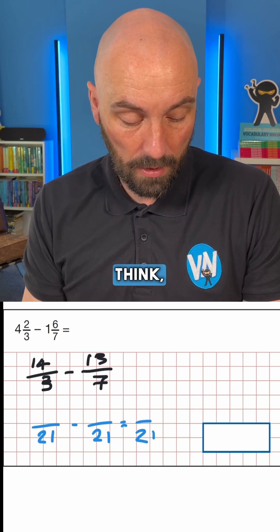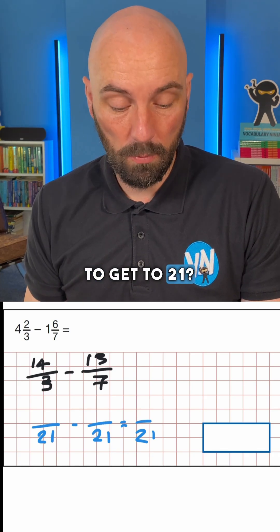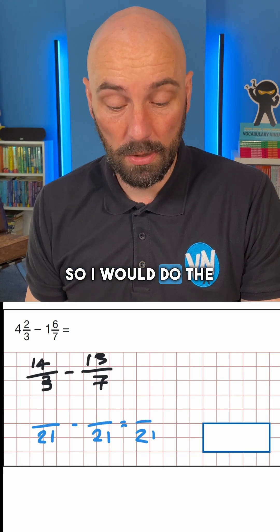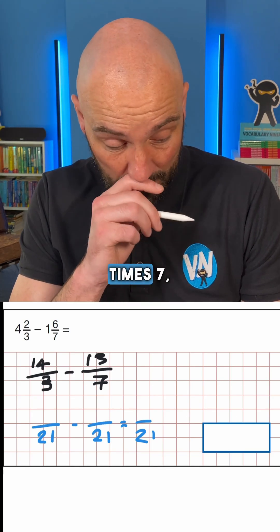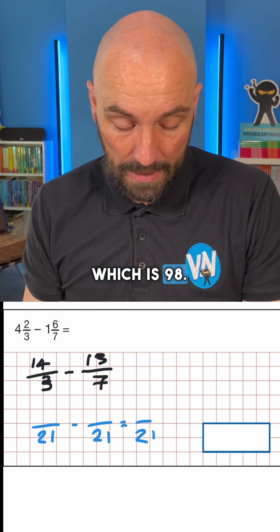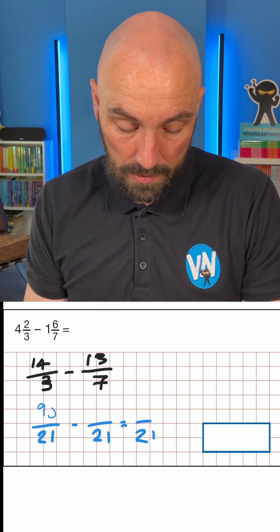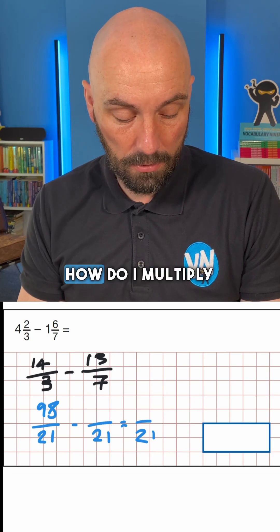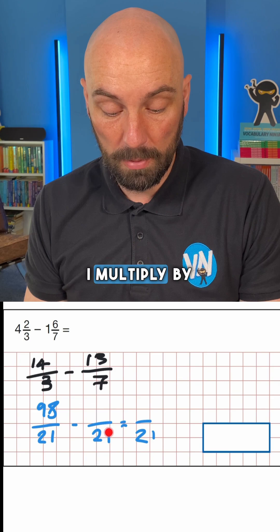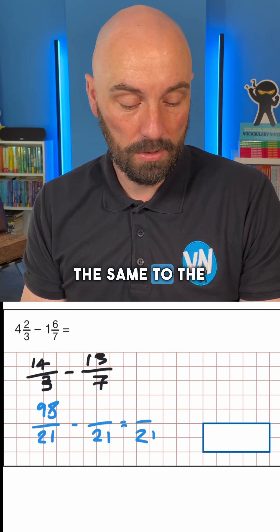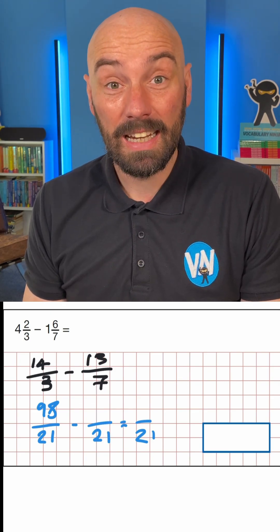To do that, we think: what do I multiply three by to get to 21? We multiply by seven, so we do the same to the numerator — 14 times 7 is 98. And for the other fraction, 7 times 7 is 49... so 3 times 13 is 39, giving us 39 over 21.